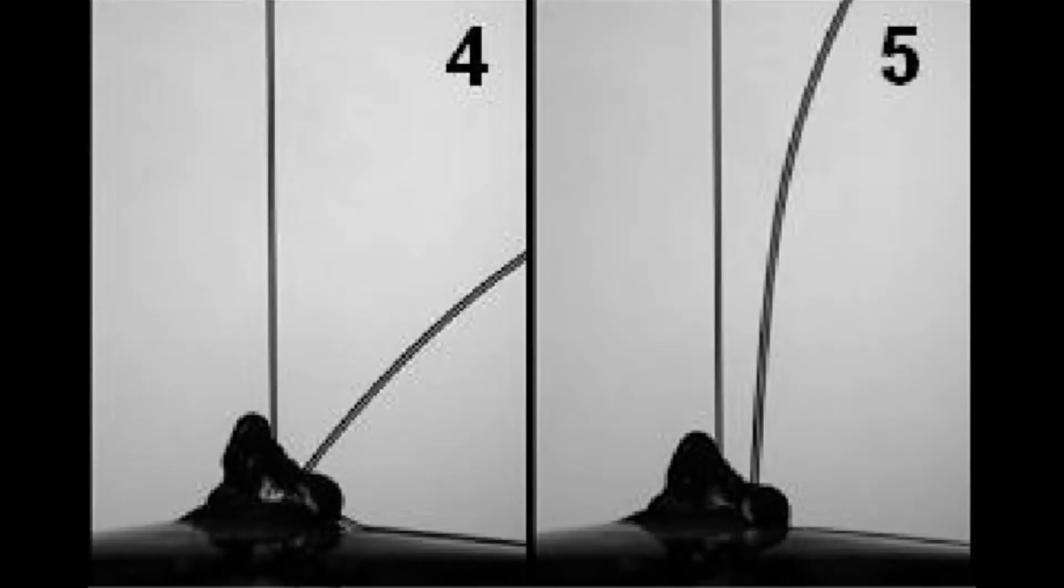As long as the incoming jet remains at its current position, the dimple will deepen, causing the angle of the outgoing jet to keep increasing until it eventually hits the incoming jet and the effect comes to an end, forming a new heap.